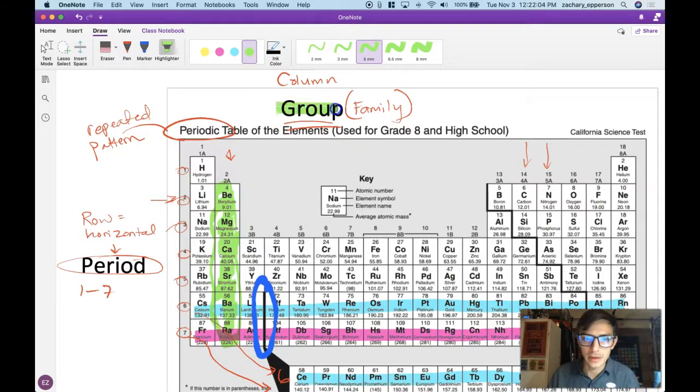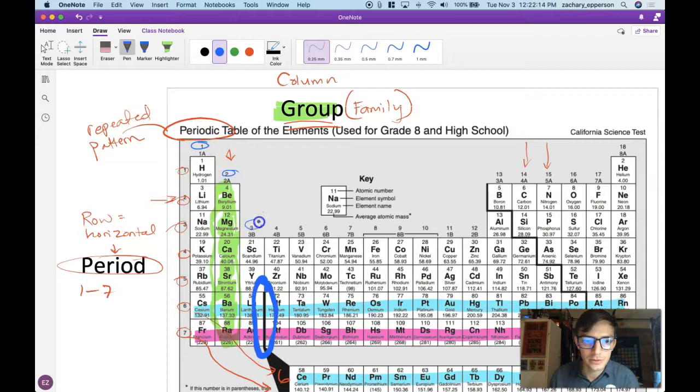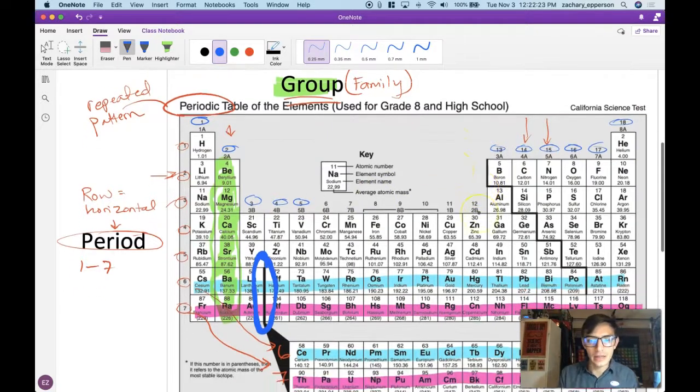Group, though, is the better term for them. So group number is written on the top here. And I'll go ahead and circle them for you in blue. Group one, group two, group three, four, five, all the way to group 18. So just remembering how they're set up.